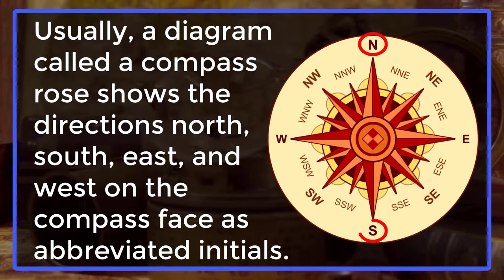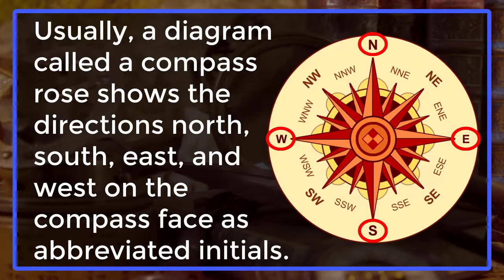Usually a diagram called a compass rose shows the direction north, south, east and west on the compass face as abbreviated initials.